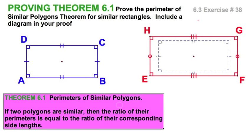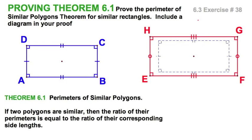Theorem 6.1 tells us that the ratio of the perimeters of similar polygons is equal to the ratio of their corresponding sides.